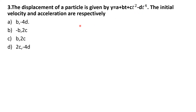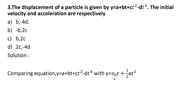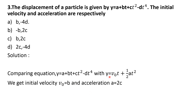Here you need to find the initial velocity and acceleration. You know the formula of displacement in terms of initial velocity and acceleration. If you compare the given equation with that formula, you get the initial velocity V₀ as B and acceleration as 2C. While comparing these two equations, you get V₀ as B and acceleration as 2C. So the answer is option C, initial velocity B and acceleration 2C.